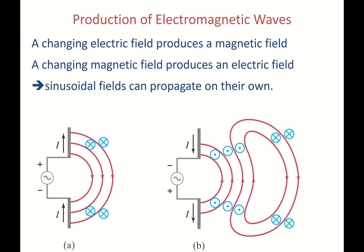Since the change in electric field produces a magnetic field and a change in magnetic field produces an electric field, if you have a current that varies sinusoidally it's going to create a field that is both electric and magnetic, propagating through space on its own.